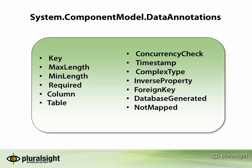The rest of the annotations we're going to look at now are not about validation, but about mapping to the database. We're going to impact the column names, column type, or table name. We can do concurrency checking, define a complex type in the model, and look at relationship annotations. Database generated and not mapped are also specific to how the model maps to the database.